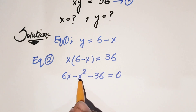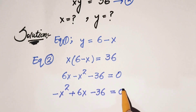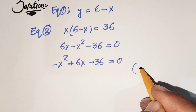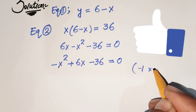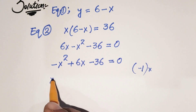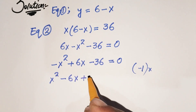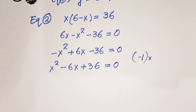Rearranging, we get minus x squared plus 6x minus 36 equals 0. Multiplying both sides by minus 1, we get x squared minus 6x plus 36 equals 0. So now our equation is a simple quadratic equation.